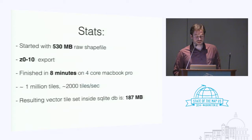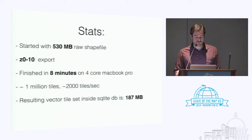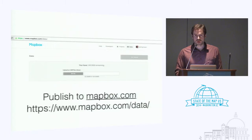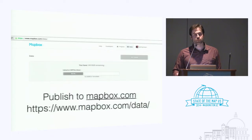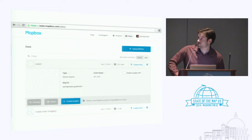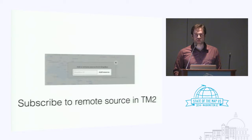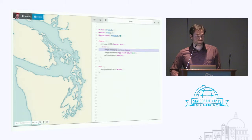I did this before the talk today — I started with the oceans polygon from OpenStreetMap, which was 530 megabytes. A zoom 0 to 10 export finished in 8 minutes on a 4-core MacBook Pro with 16 gigs of RAM — about 1 million tiles, about 2,000 tiles per second — resulting in a vector tileset in an mbtiles at 187 megabytes. From there you could set up your own server to serve those tiles, but at Mapbox we have an easy upload. When you upload it to Mapbox you get a place to view it online, and then you can grab a map ID, plug it back into TileMill 2 on your local machine, and start styling it.